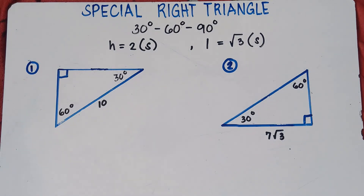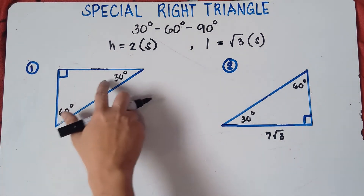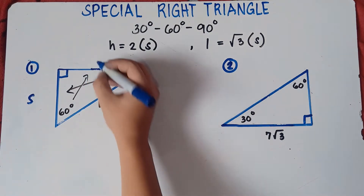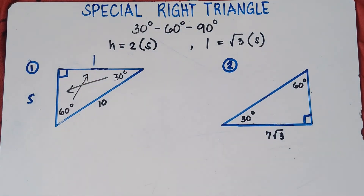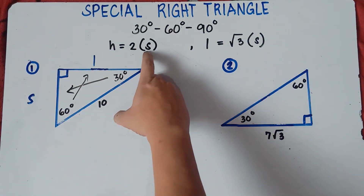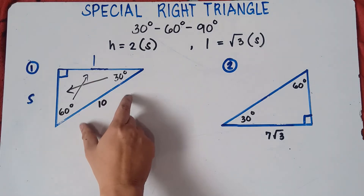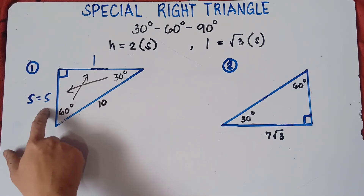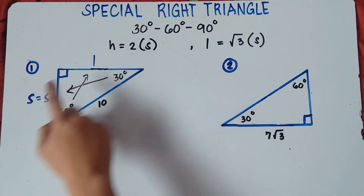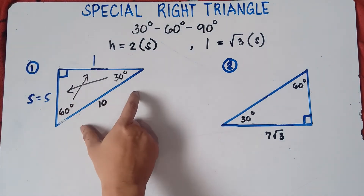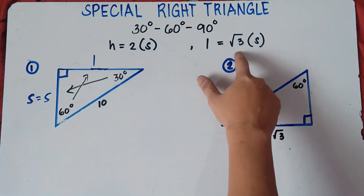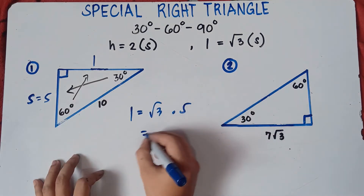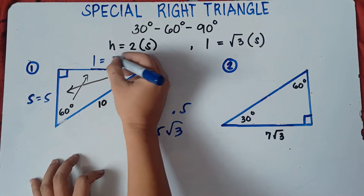We need to locate the shorter leg and the longer leg. The shorter leg is opposite the 30-degree angle, and the longer leg is opposite the 60-degree angle. You can answer directly: since the hypotenuse is twice the shorter leg, divide 10 by 2 to get the shorter leg = 5. Then the longer leg = √3 times 5, which is 5√3.